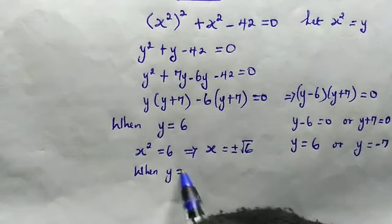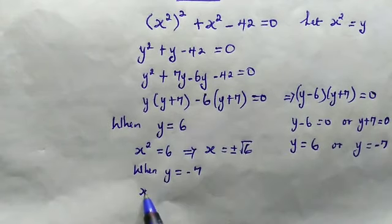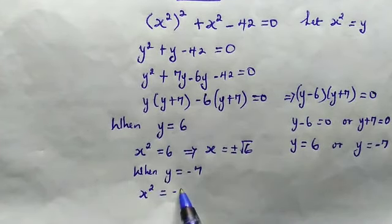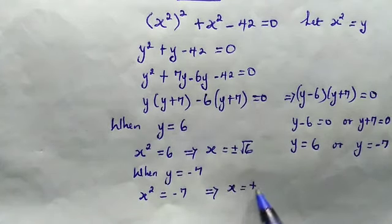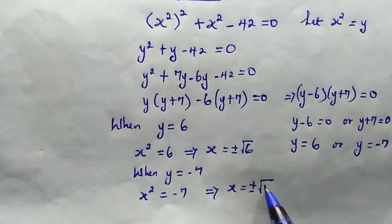When y is equal to negative 7, x squared is equal to negative 7. So this implies that x is equal to plus or minus root of negative 7.